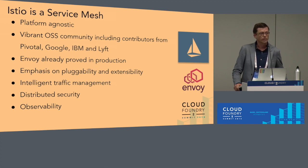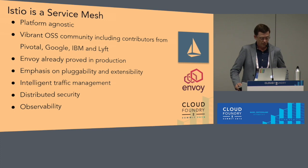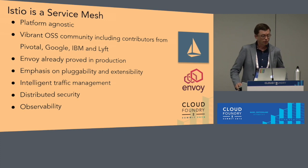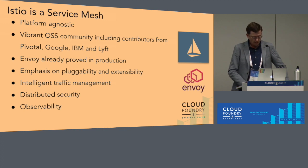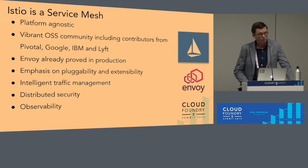We like Istio because it has a very vibrant open source community and is platform agnostic. Like the success we've seen with the Kubernetes project, Istio is gaining wide adoption. There's consistent maintenance and innovation happening from Google, IBM, Lyft, and more recently Pivotal. Envoy has already been proven in production. There's an emphasis in Istio on extensibility and pluggability. And it addresses concerns around traffic management, security, and observability.